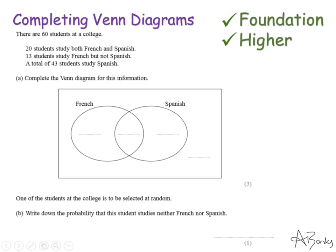I'm going to go through first and fill in the easiest information. First thing they've told me, there's 60 students at a college - that's what all of these four numbers are going to add up to, so I can't do anything with that yet. 20 students study both French and Spanish, so that is the number that I'm going to put in the middle here. Then it says 13 students study French but not Spanish, so because they're French only, that's going to go into there.